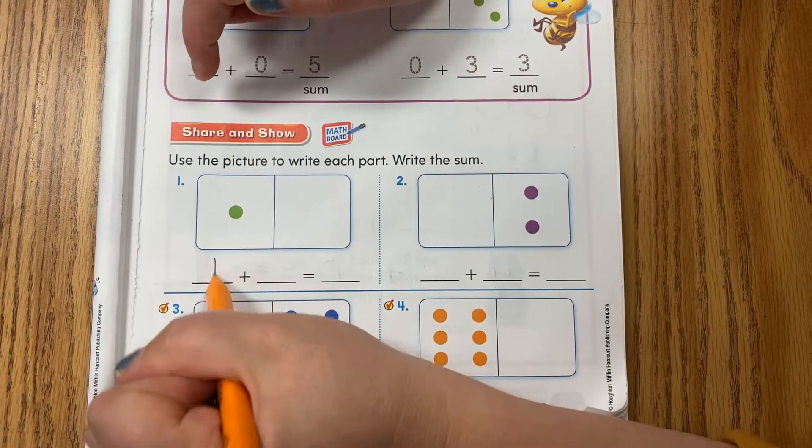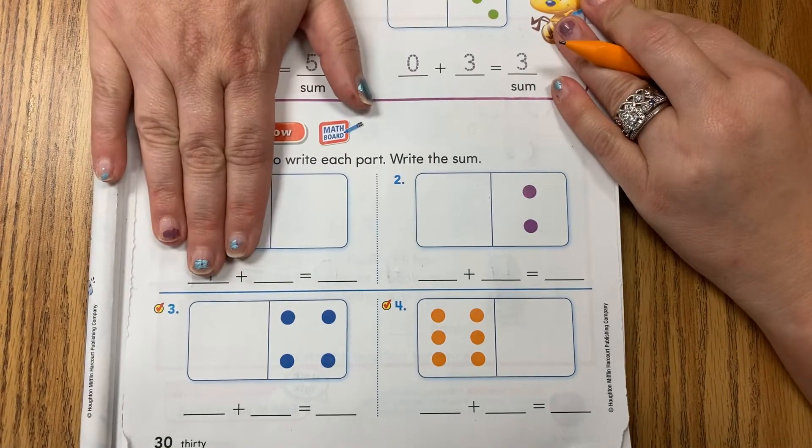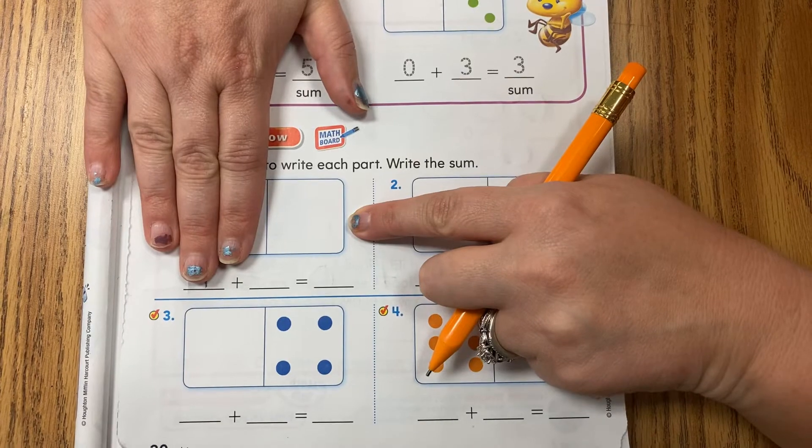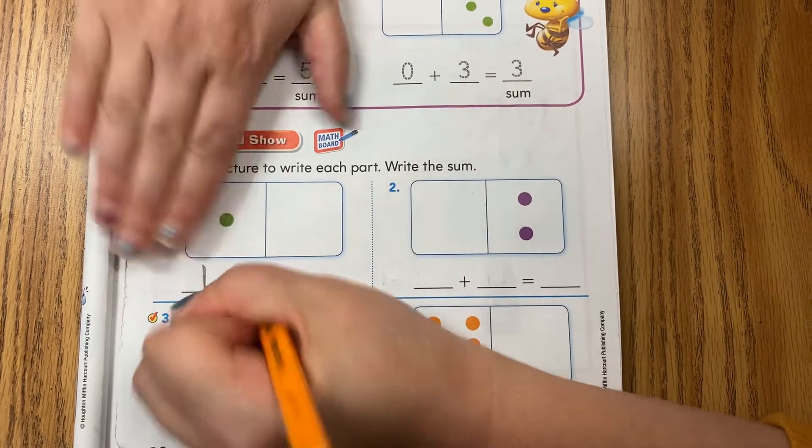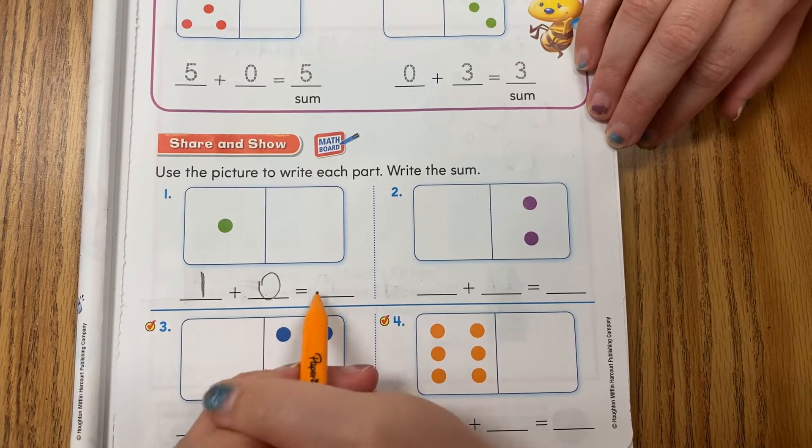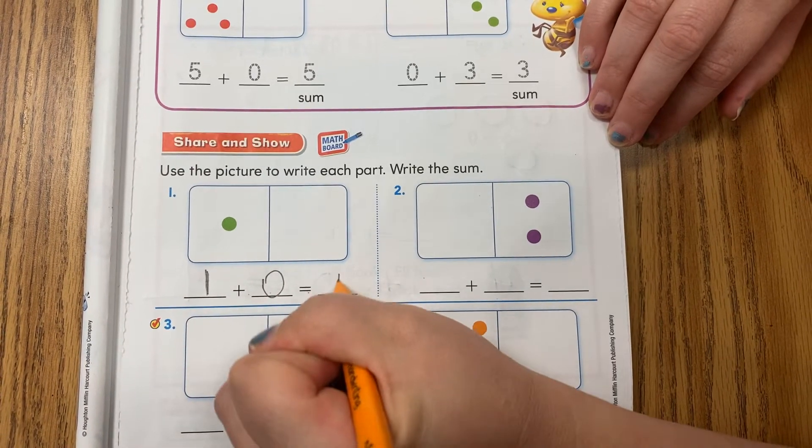Perfect. There's one. Now cover up and look at the second half of your domino. How many dots do you see? Yep, zero. So let's put those together. One plus zero is the same as one.